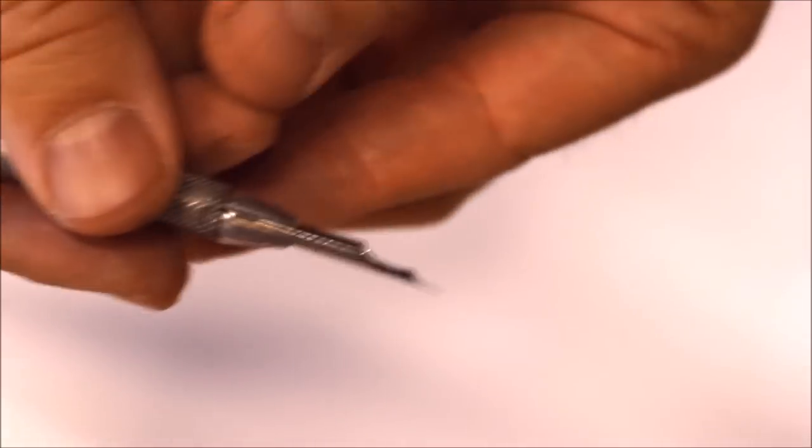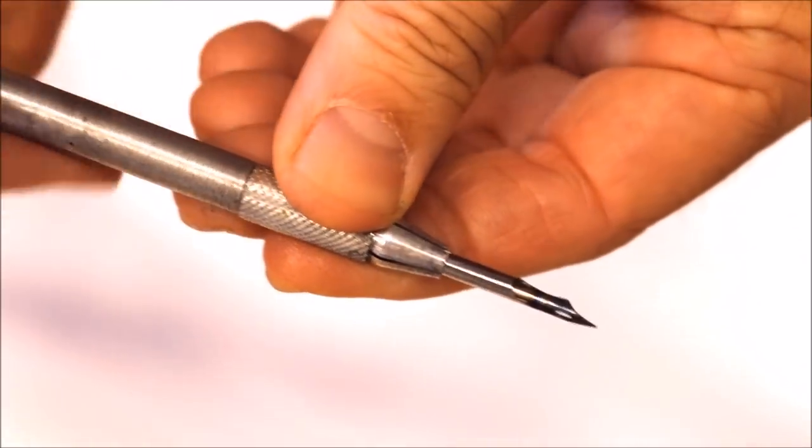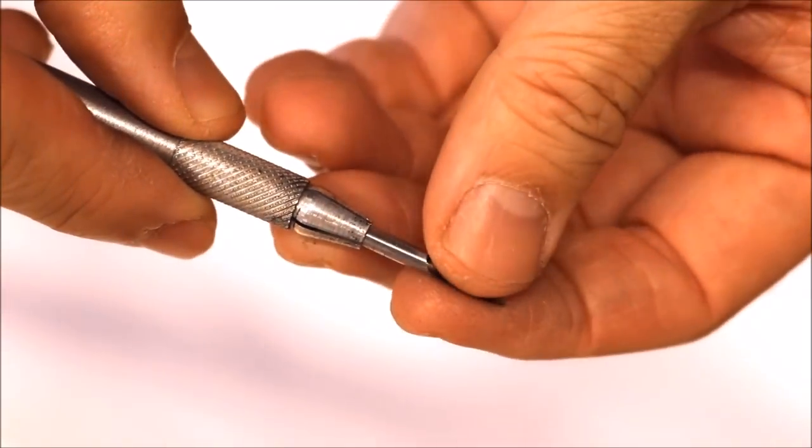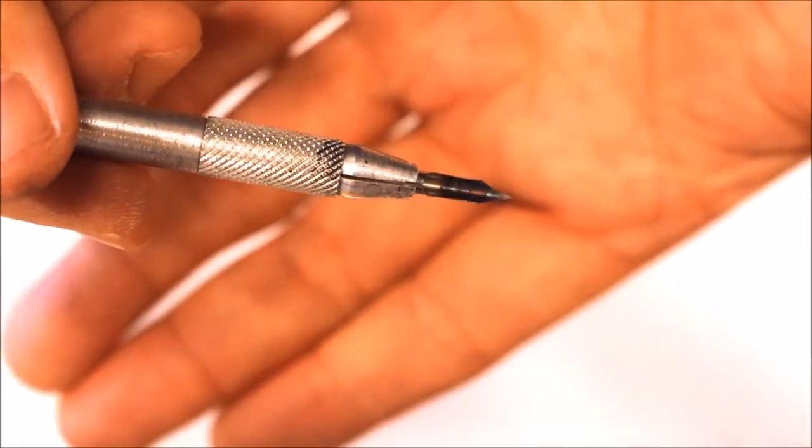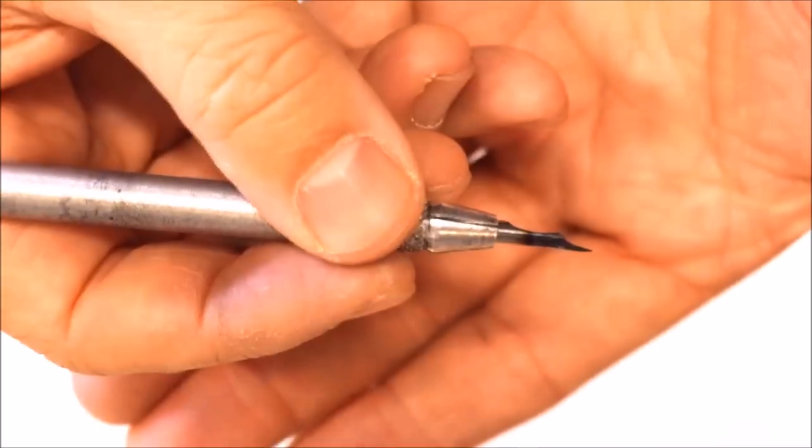This way will give you a longer reach. Now, if you wanted that to be shorter, loosen it, push this back in, and then just tighten it this way. And then you can start inking just like this, holding the grip like this.